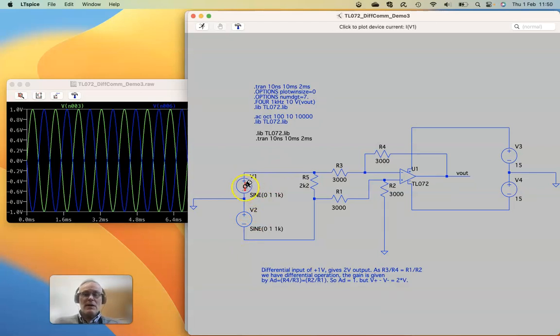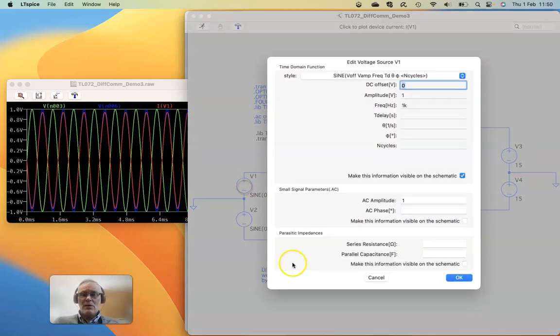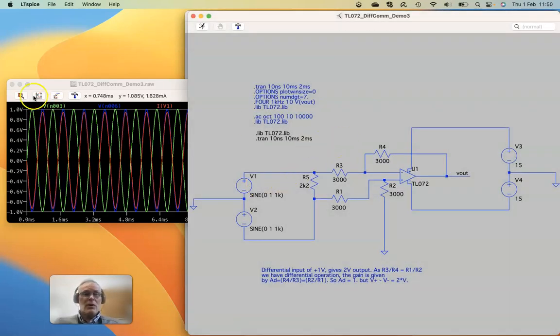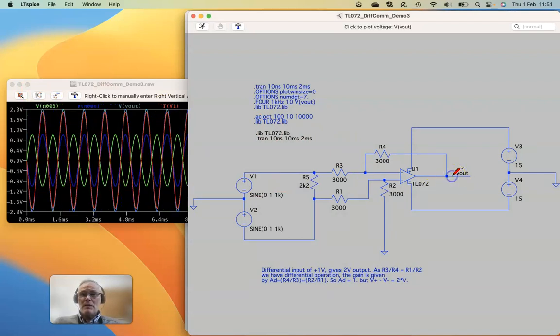Obviously, we can set up the impedances of the sources. We can do that if we right click. We can set up various parameters, including series resistance on our voltage sources. So if we look at the output now, we will see that we get twice the output because we've got the one volt minus minus one volt. We should get a two volt output.